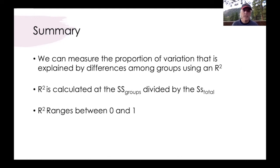As a proportion the R-squared value ranges between 0 and 1 where 0 represents none of the variation explained by our among group factor and 1 representing the case where all of the variation is explained by our among group factor.